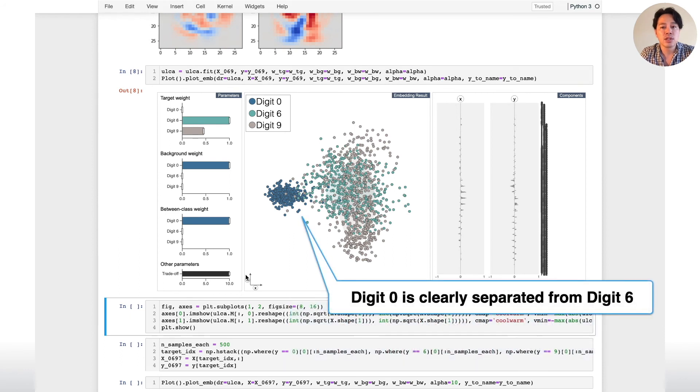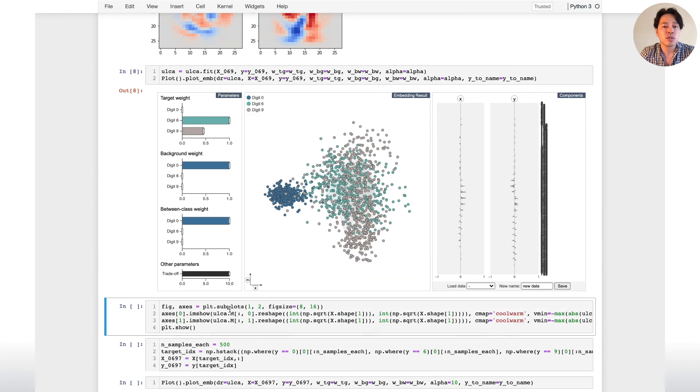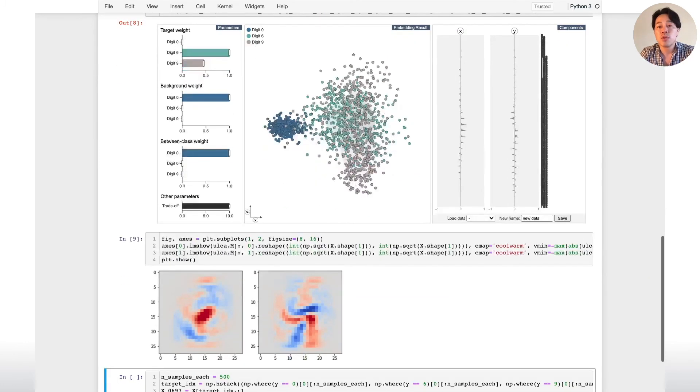Now, digit 0 is clearly separated from digit 6. Similar to the previous example, we will visualize the axis information with heat maps.